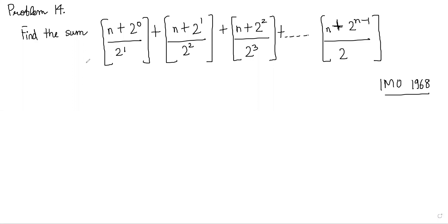Hi, so in this question we look at this sum, which is a sum of various rational numbers with floor function around each term. Basically, this is n plus 2 to the power 0 by 2 to the power 1.